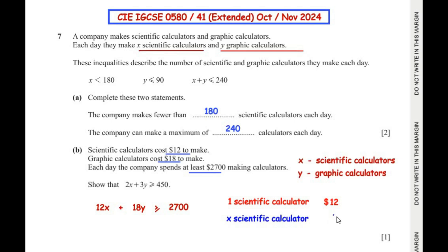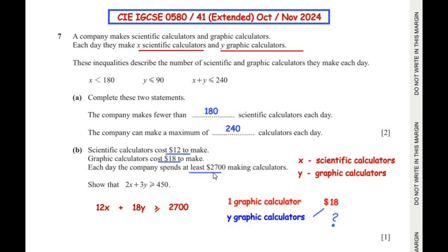The cost of x scientific calculators is 12x dollars, using cross multiplication. Similarly, the cost of y graphic calculators is 18y dollars. Since the company spends at least $2700 per day, we write 12x + 18y ≥ 2700, meaning the cost can be equal to or greater than 2700.